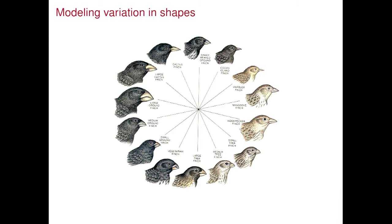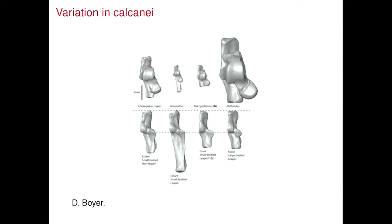These are Darwin's finches. We want to understand variation in shapes in nature for a variety of reasons. The actual data I work on are not Darwin's finches, but calcanei — heel bones — of extinct and extant primates. I get meshes of heel bones from my collaborator who is a morphologist, and he asks me to measure variation and measure distances. Ideally, a tree induced by bone distances compared to an evolutionary tree based on gene distances might suggest selective pressure.